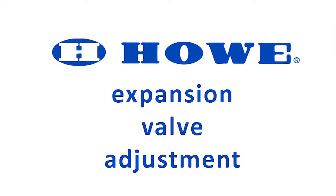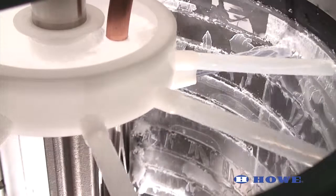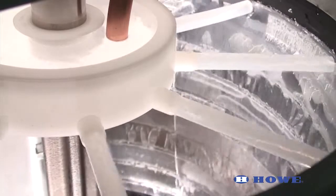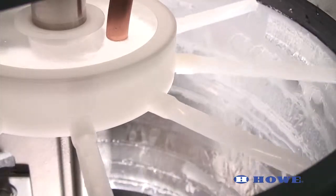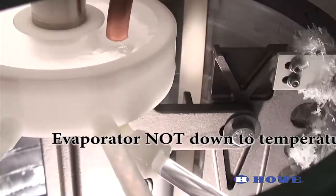Adjusting the expansion valve on HAL ice flakers. When starting up the HAL flaker, allow sufficient time for the unit to come down to temperature and to balance out. Here the ice flaker was just started and is not down to temperature.